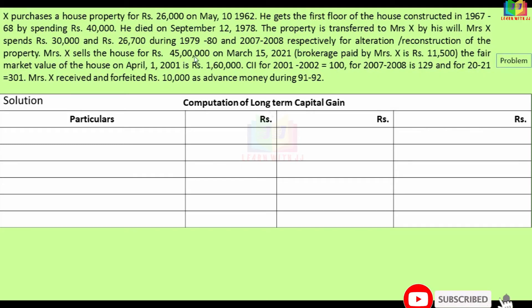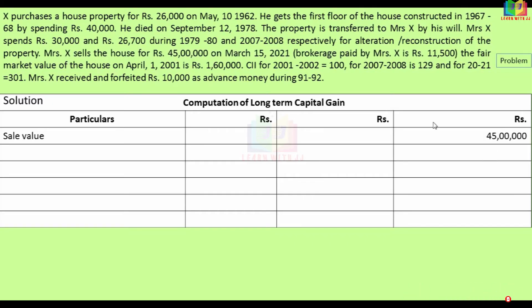First, we calculate the sale price: Rs. 45 lakhs. For selling, brokerage paid by Mrs. X is Rs. 11,500. So we deduct it to get the net sale consideration of Rs. 4,88,500. Now for the cost of acquisition, we compare the purchase price and the fair market value. Since the purchase price is Rs. 26,000 and the fair market value on April 1, 2001 is Rs. 1,60,000, we take Rs. 1,60,000.